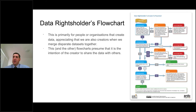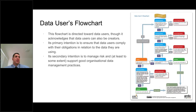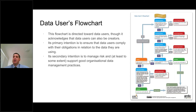The next is the data users flowchart. That flowchart is directed towards people who are using other people's data rather than creating it. Its primary intention is to ensure that users comply with their obligations in relation to those licenses. The secondary intention is to manage the risk of your organization and support good organizational data management practices - so if you have researchers mashing datasets together and they have desires on publishing data later on, it's very helpful to make sure what they've done with the data is legal before they do anything else.